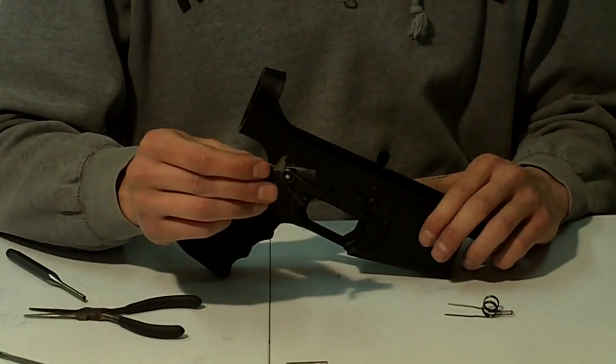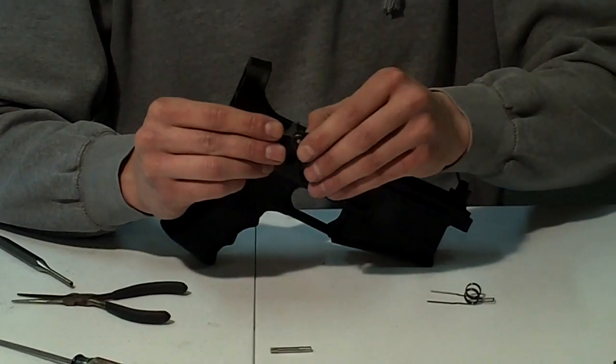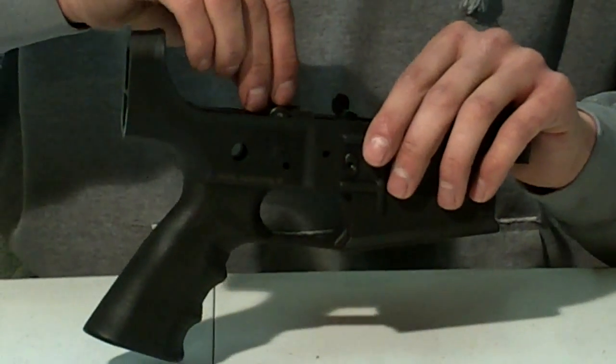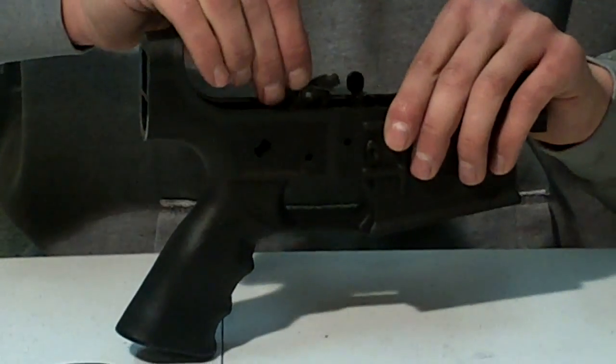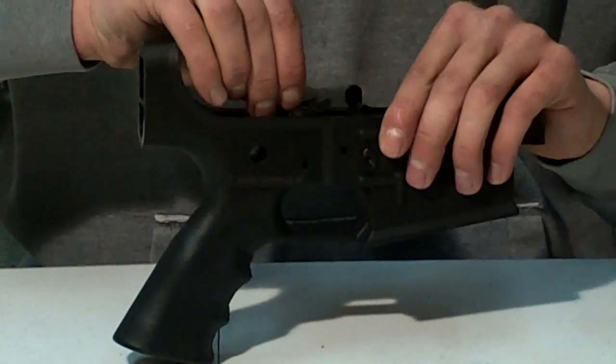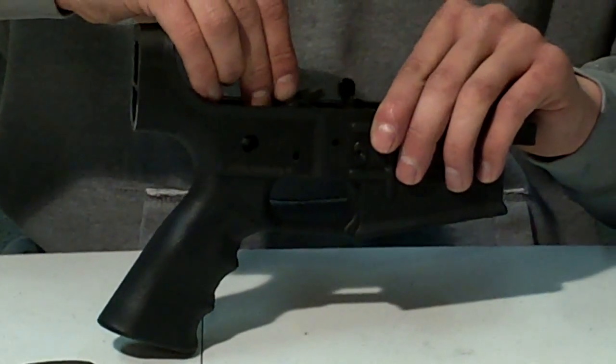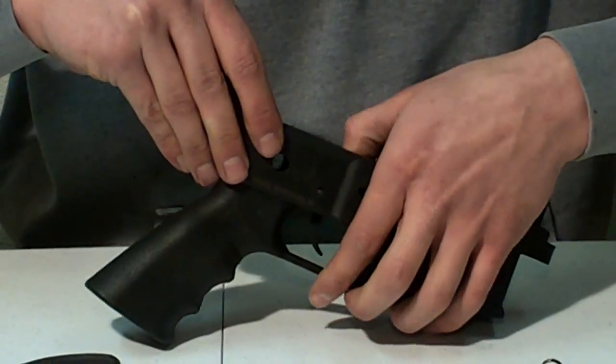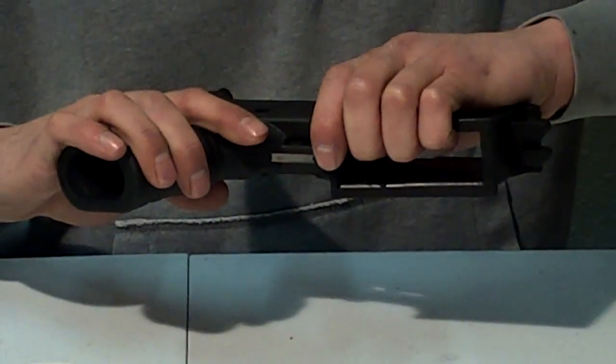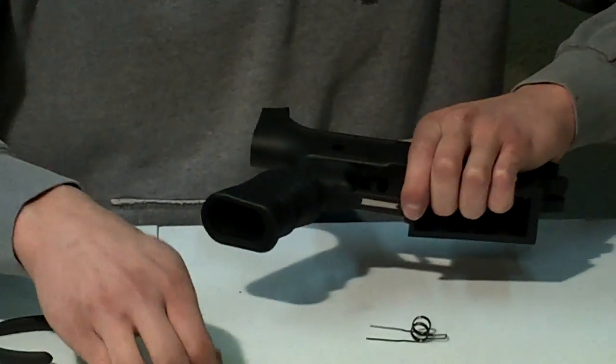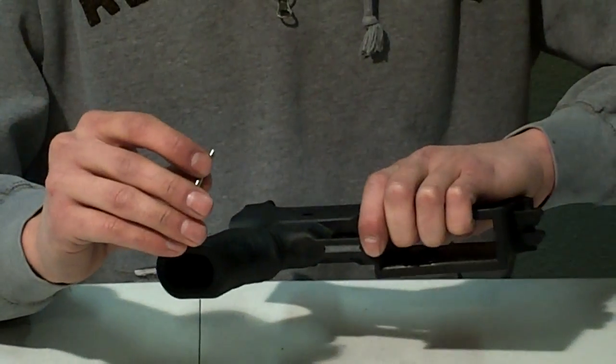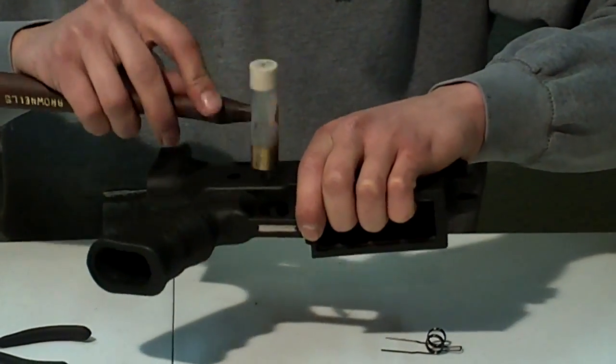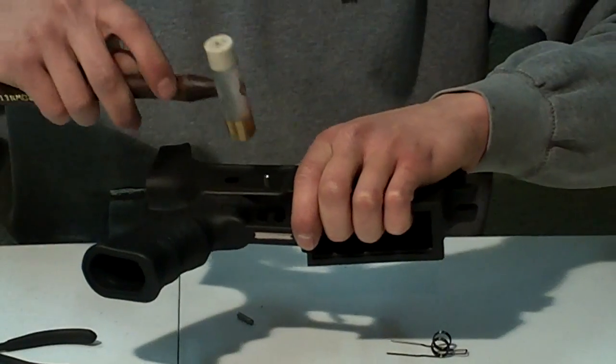Now you can take your Toothendale trigger assembly and go ahead and insert that into your lower. Making sure the legs of the spring stay forward. Make sure those are there. You can push that down and line the pin up and then we'll take the short trigger pin and just tap that in. And you'll notice the slave pin drops out there.